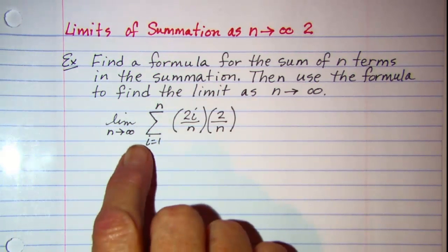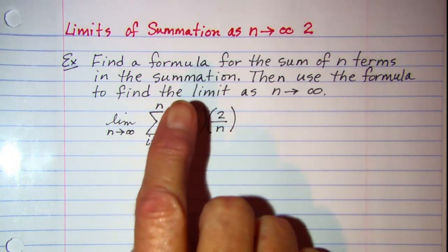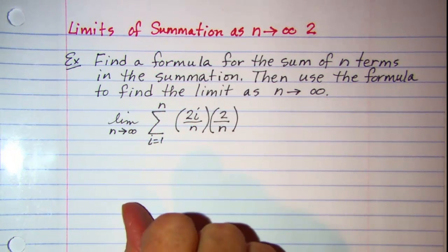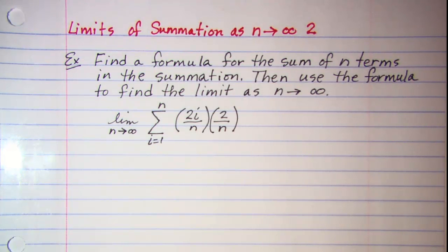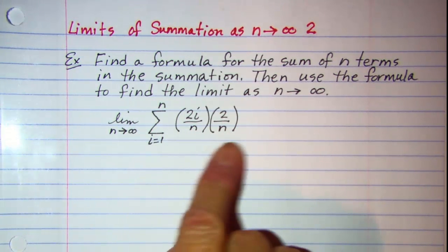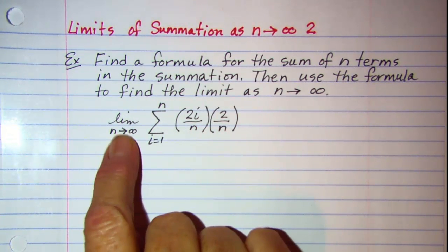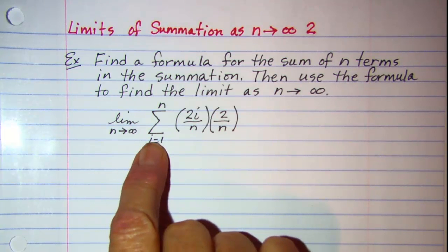The problem that we're looking at is to find a formula for the sum of n terms in the summation, then use the formula to find the limit as n approaches infinity. So what we'll do first is find our formula for the summation and we'll basically ignore this limit right here until we're ready to use it.